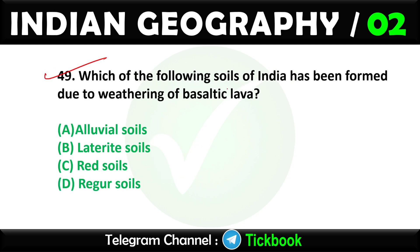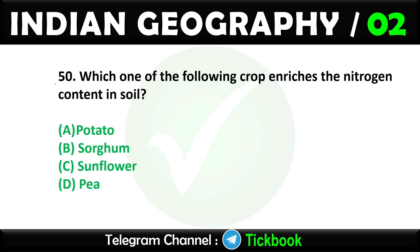Question forty-nine: Which of the following soils of India has been formed due to weathering of basaltic lava? Option number D is the right answer: Regur soil. Question fifty: Which one of the following crops enriches the nitrogen content in soil? Option number D: Peas.